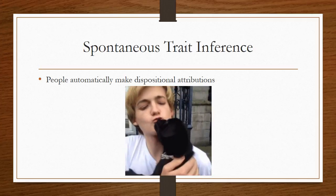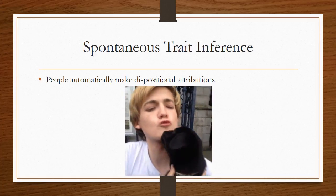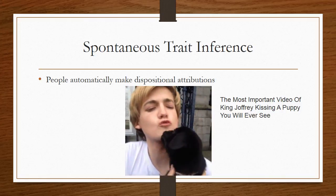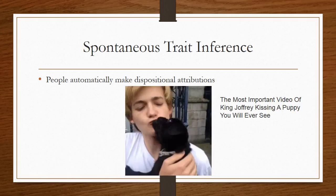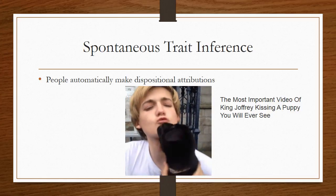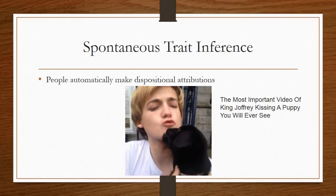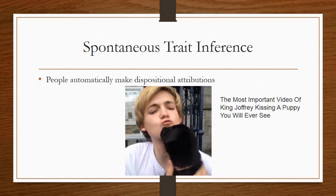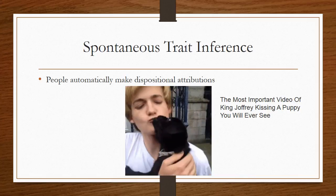But here's a picture of the same actor being super cute with a puppy. The gif this came from is titled 'the most important video of King Joffrey kissing a puppy you will ever see.' Even for people who know he's an actor and isn't really like the character, seeing him friendly with a puppy blows their minds. People make dispositional attributions for the actor based on what the character does — and actors who play bad guys often say people treat them like their bad-guy characters in the street. That's spontaneous trait inference.